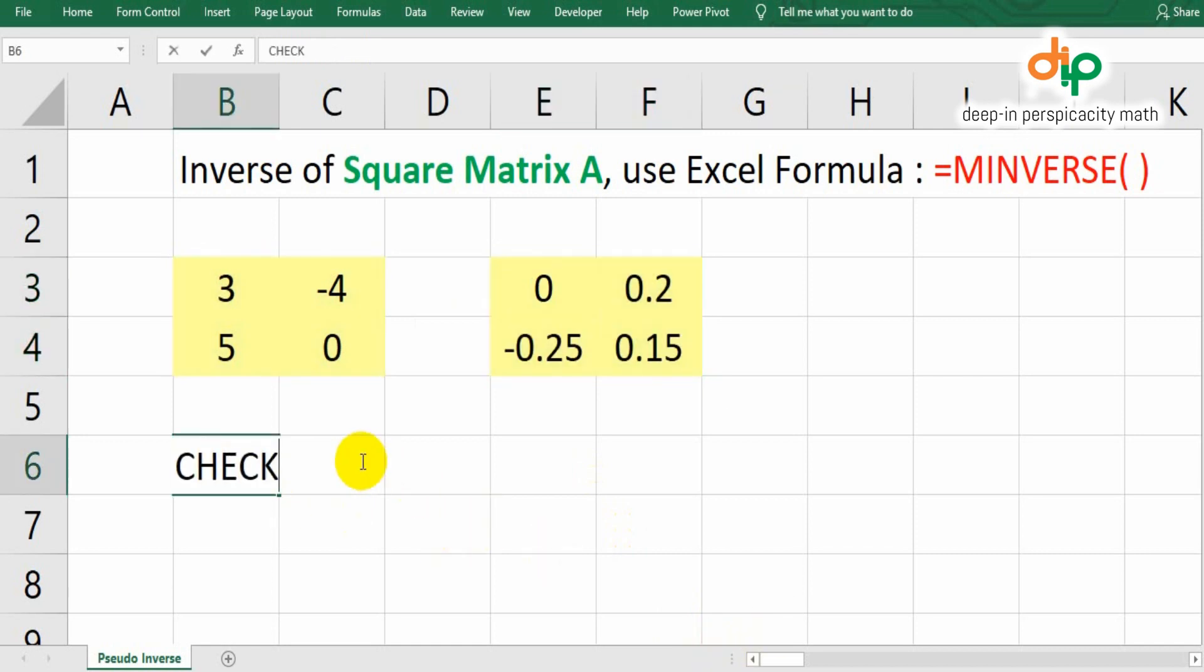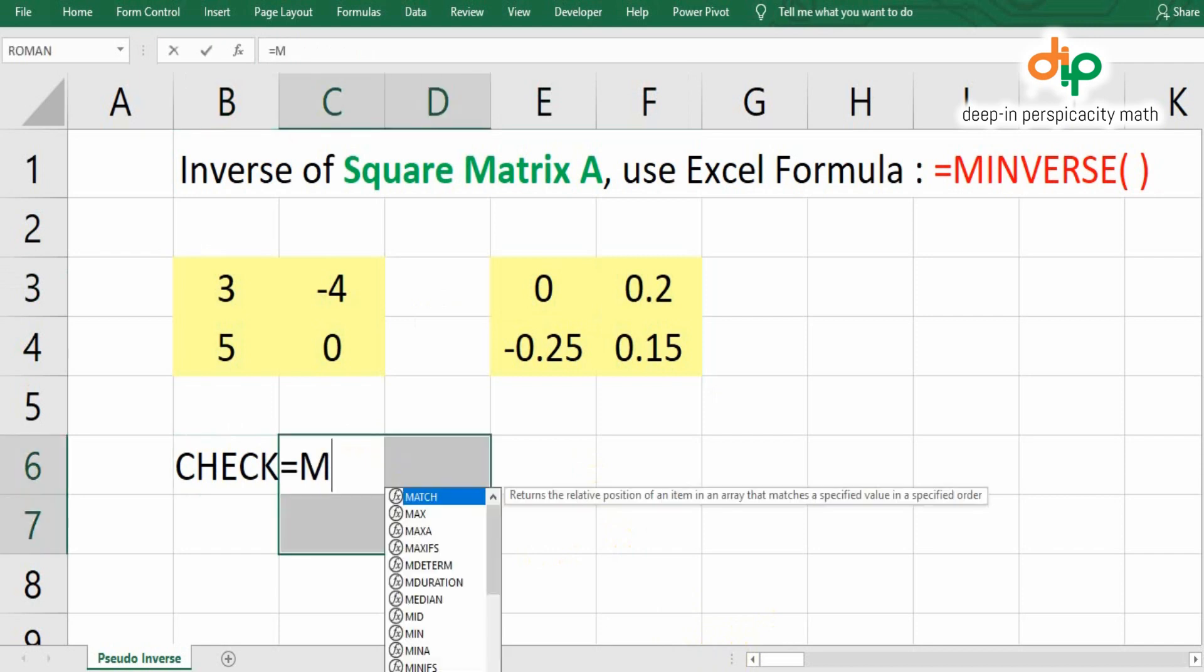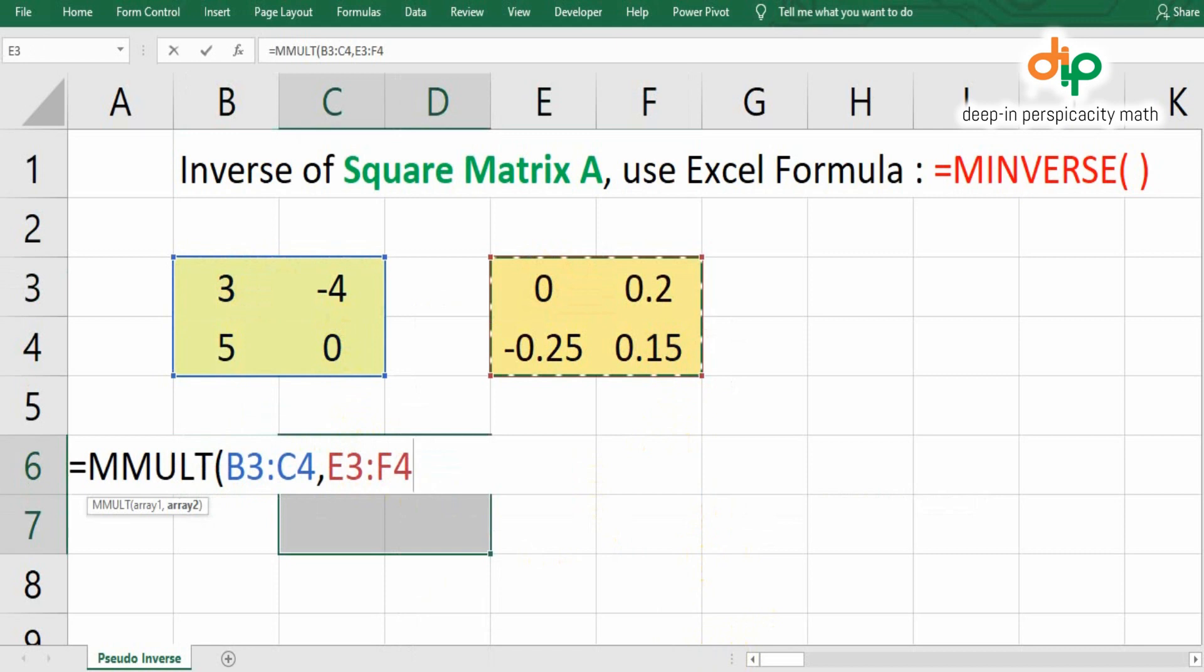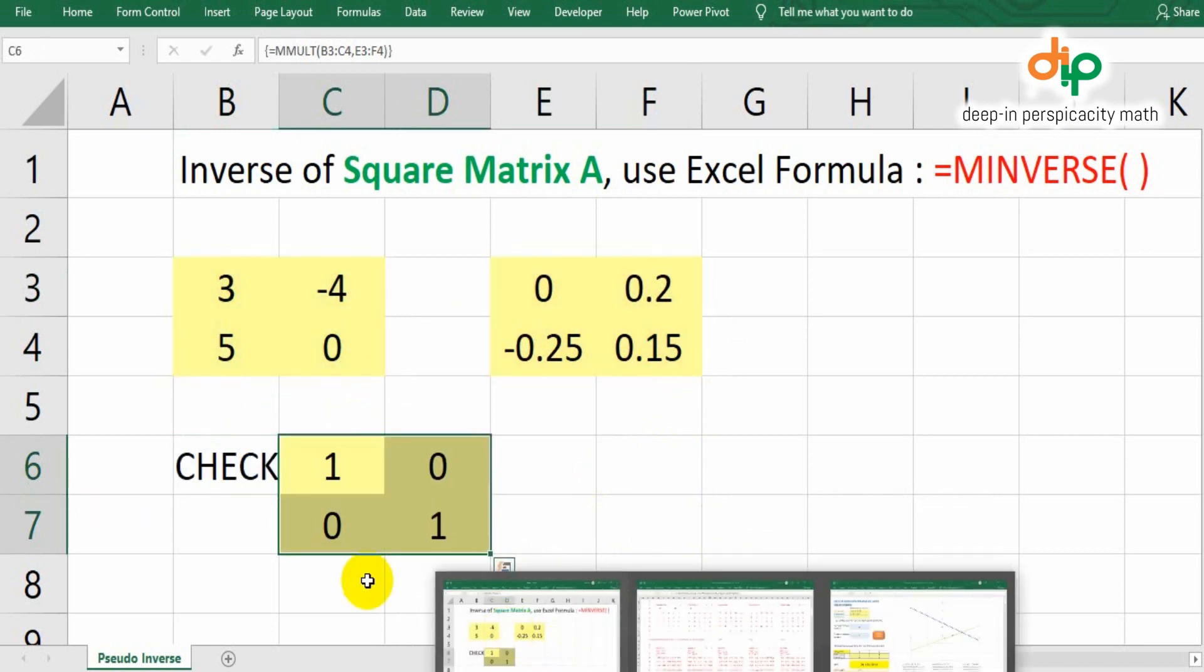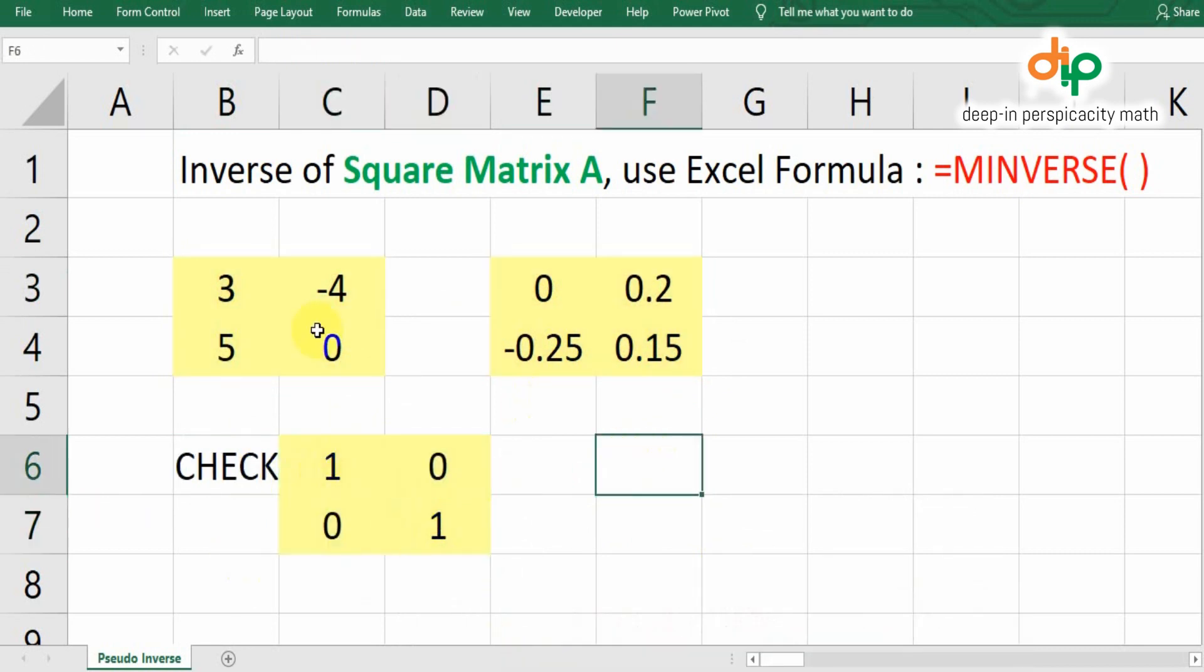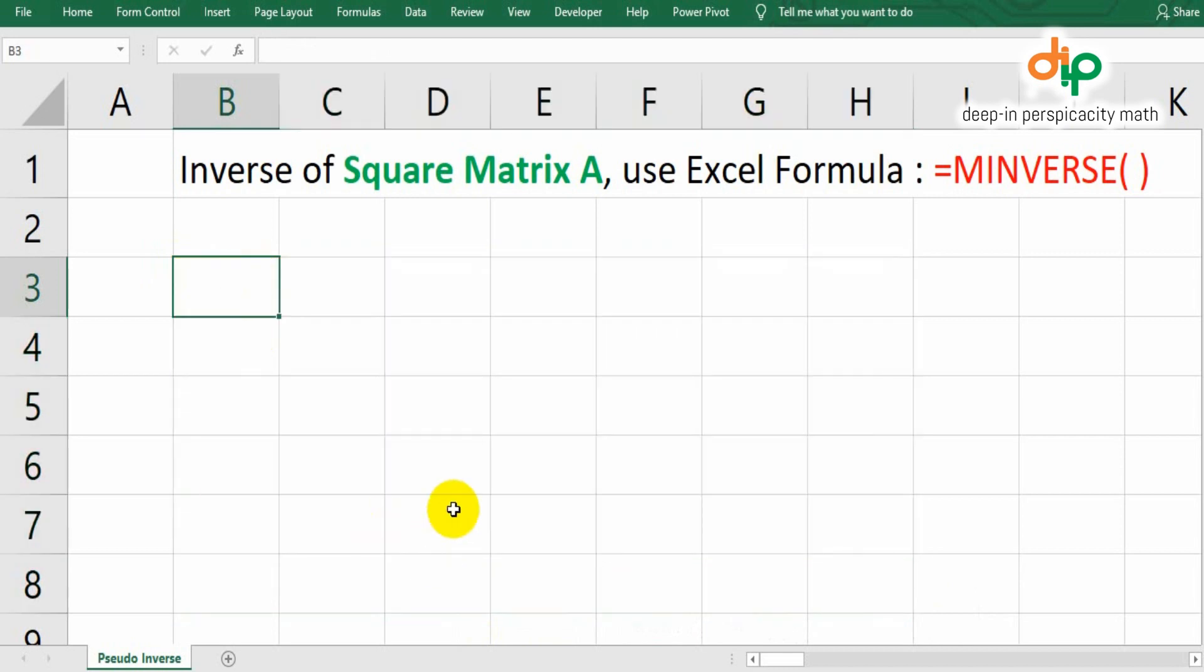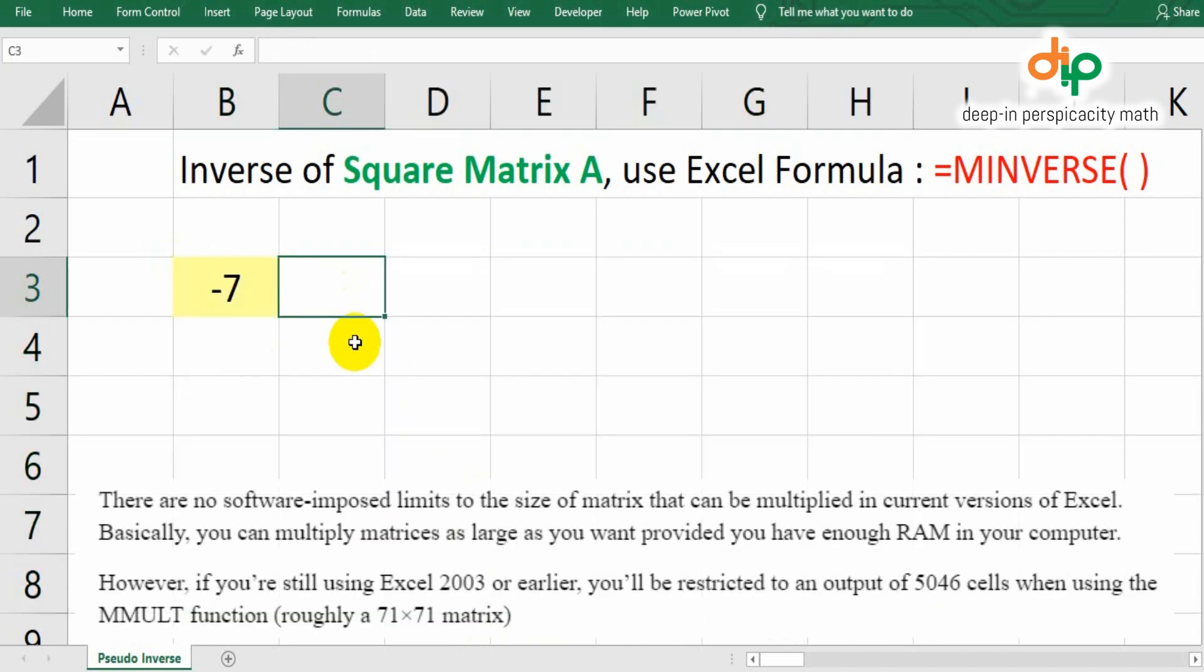We can check the result of a matrix inverse by multiplying the original matrix with its inverse. If the multiplication result is identity matrix, then the matrix inverse is valid. Perform the same steps for matrix A 3 by 3.